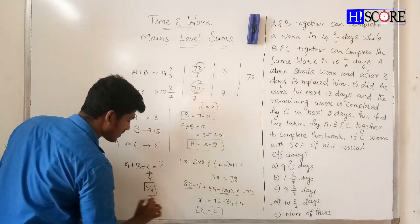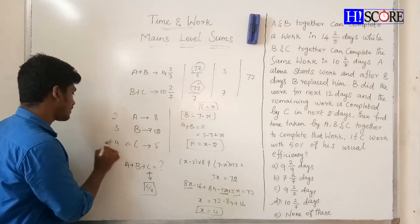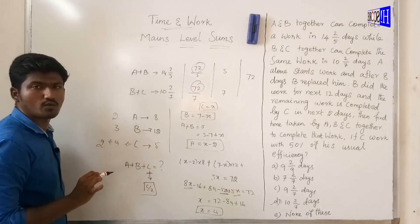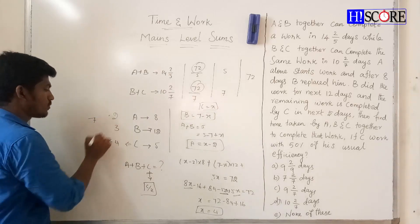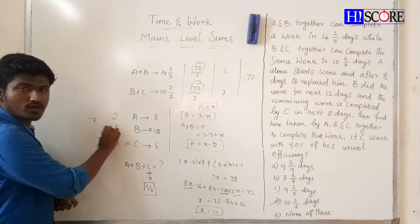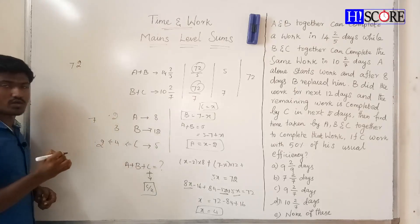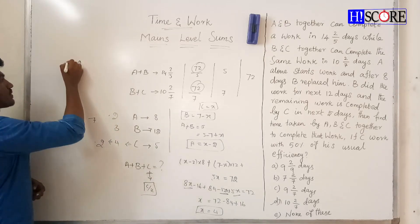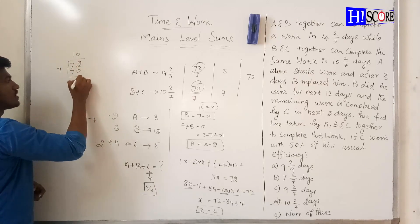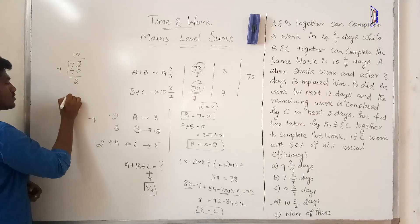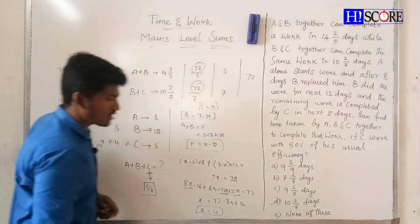C's work value is 4, and since C works at 50% efficiency, C's effective efficiency is 4 divided by 2 equals 2. So combined efficiency of A, B, C: 2 plus 2 is 4, plus 3 is 7 units. Total units of work is 72, so time taken is 72 divided by 7, which is 10 and 2/7 days.